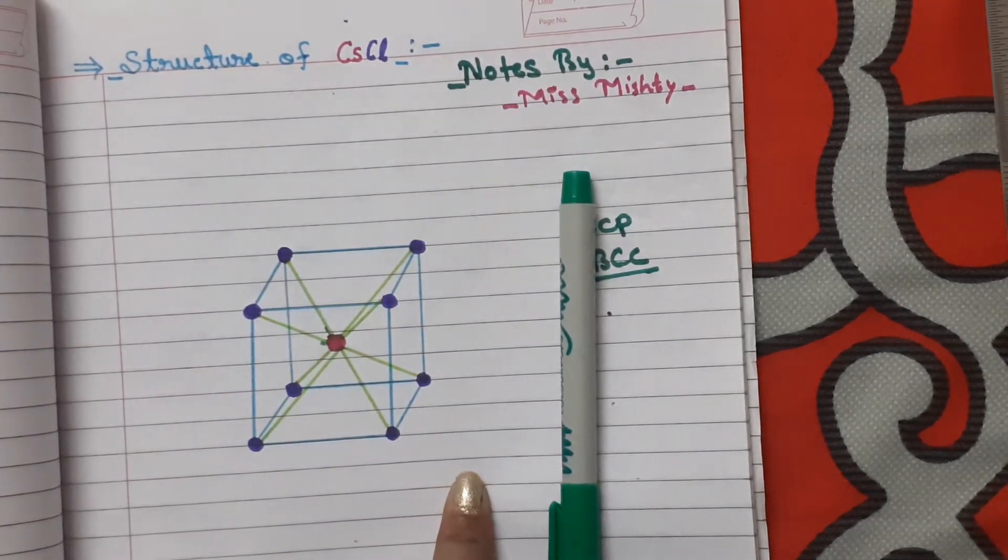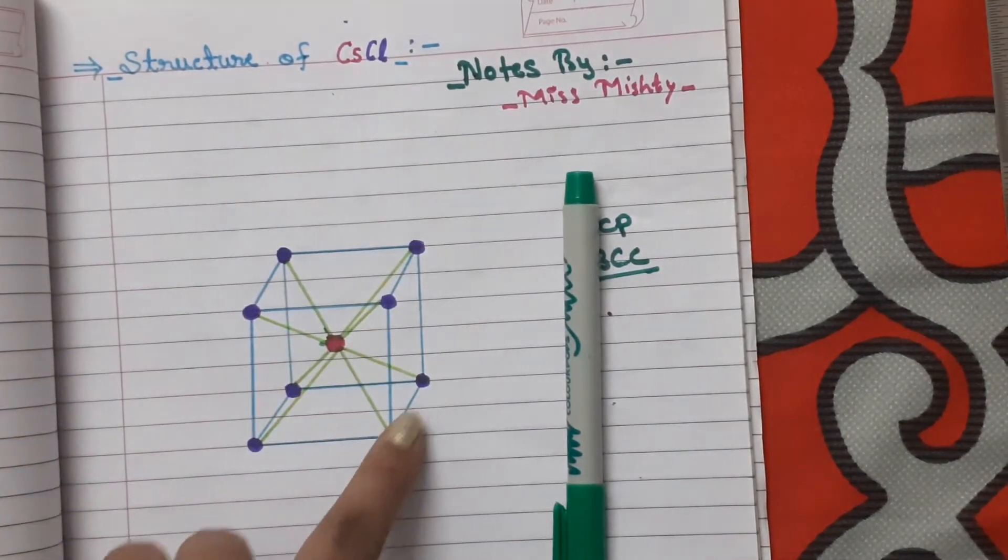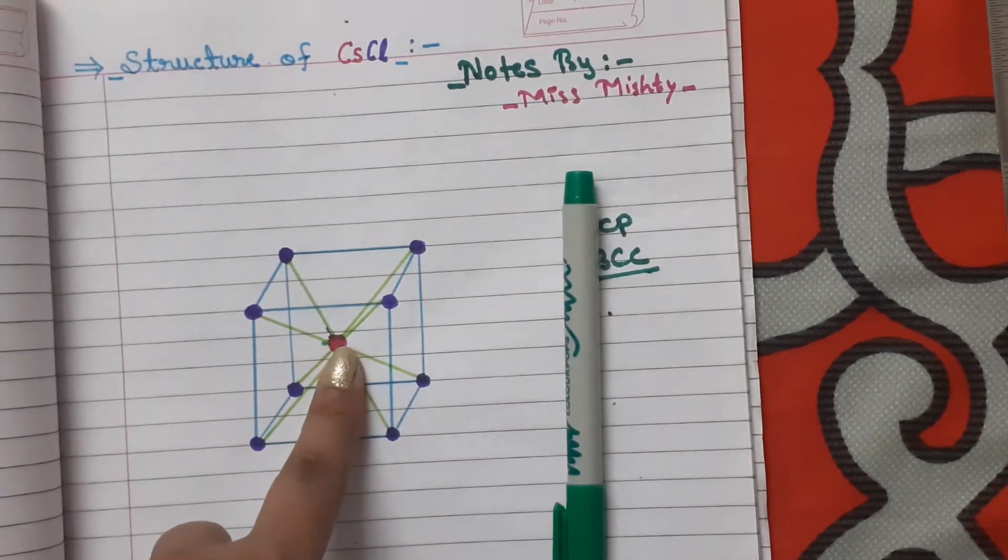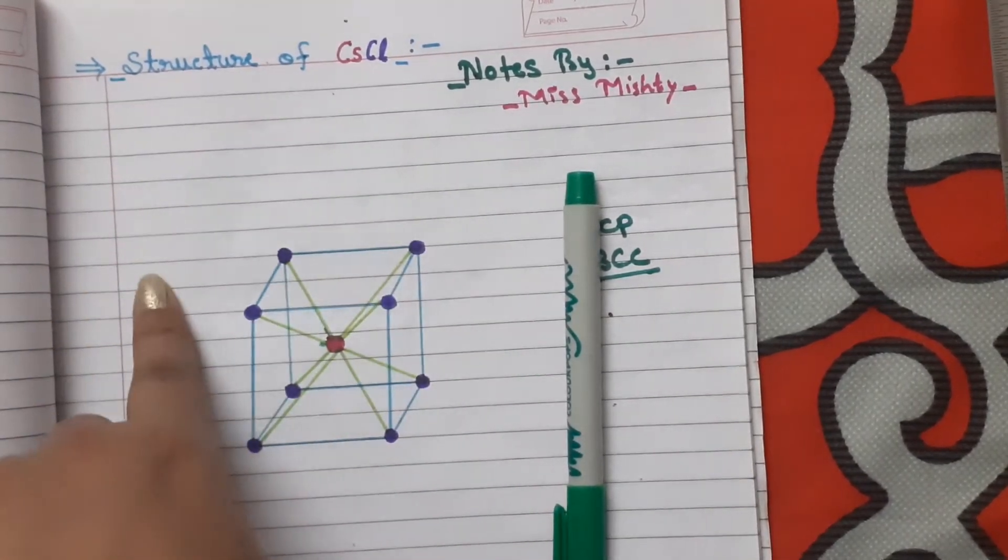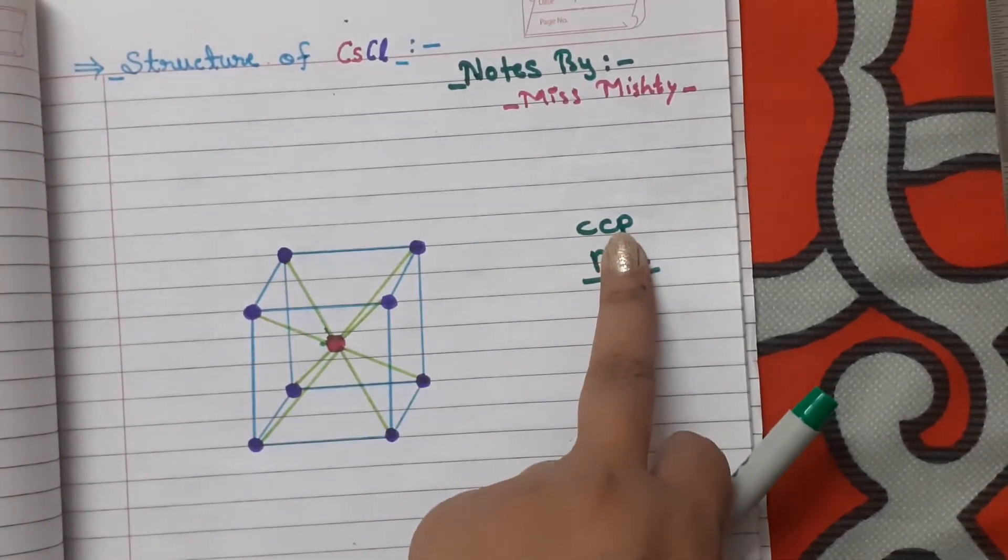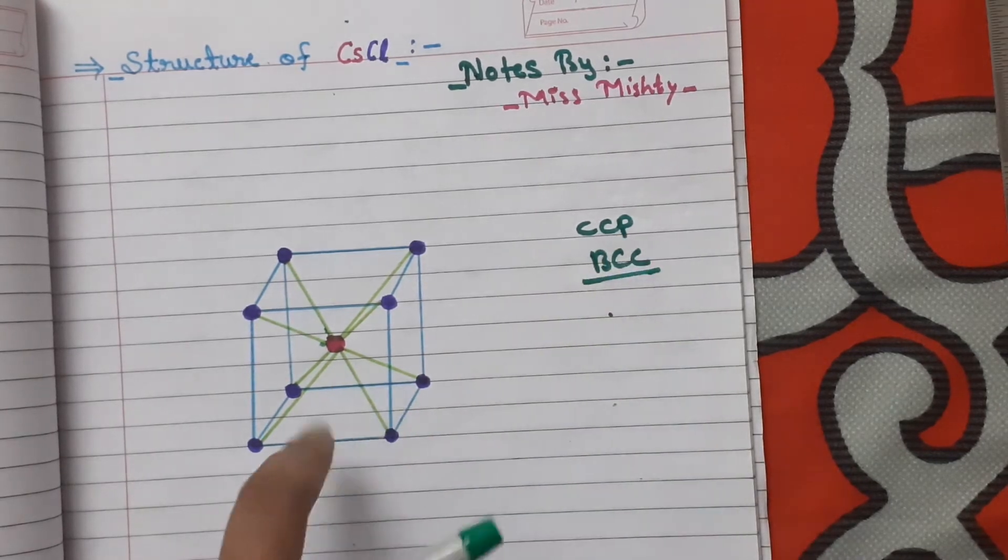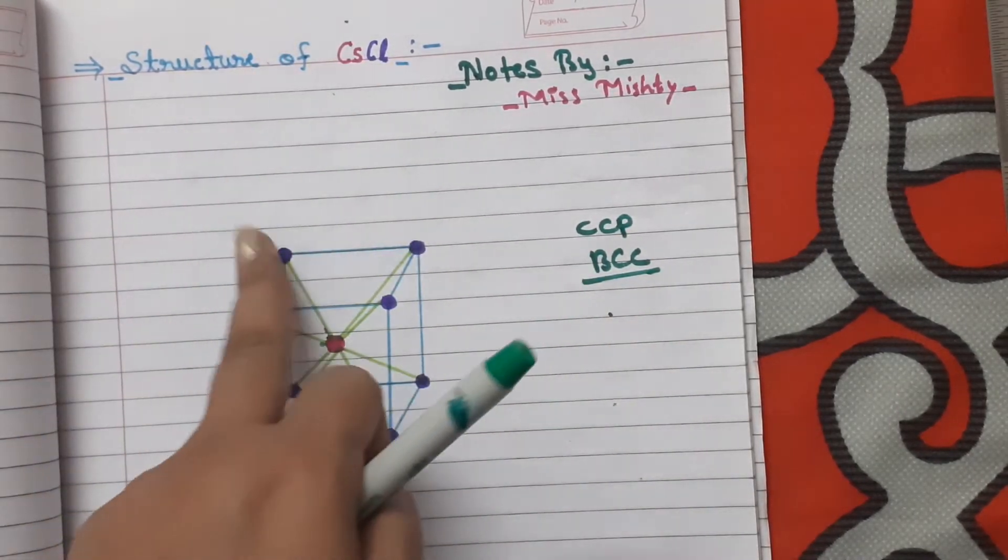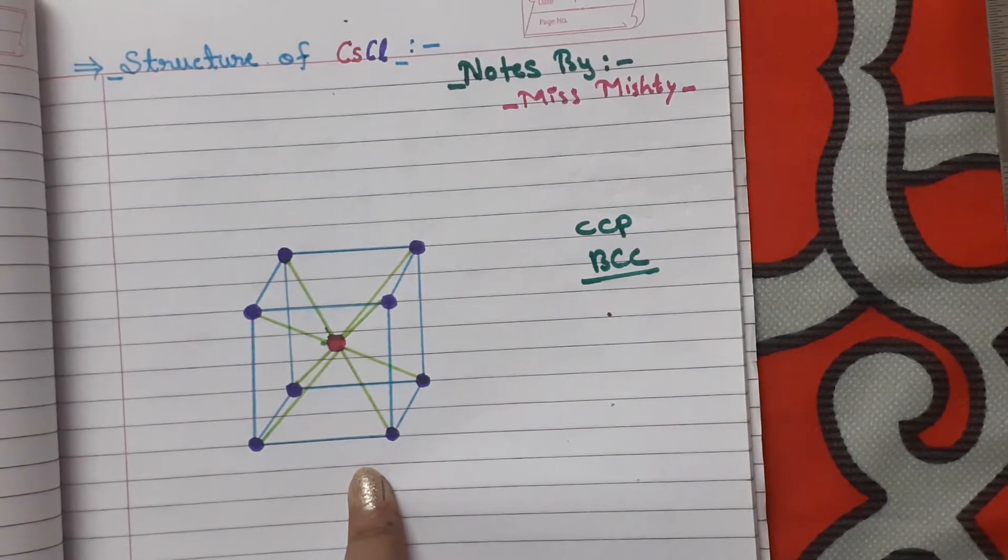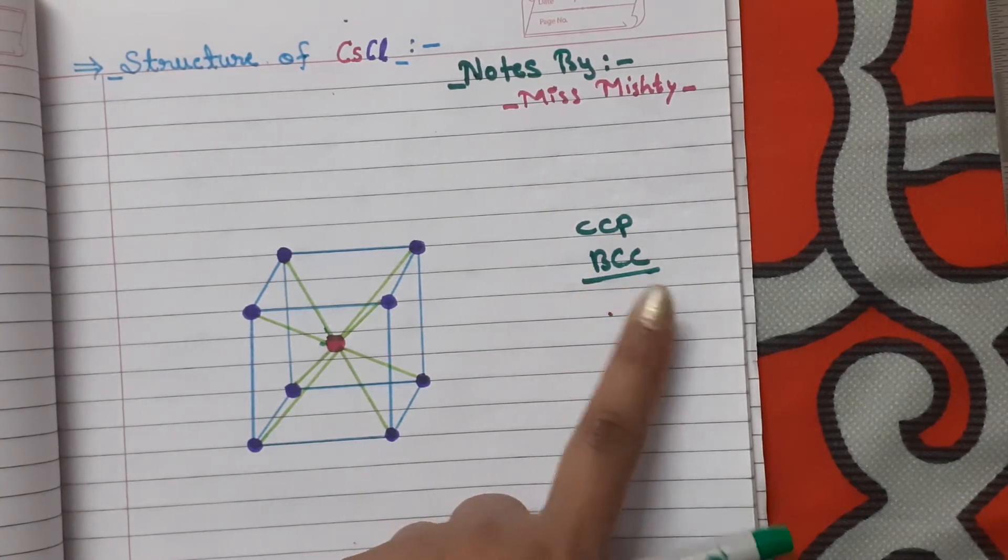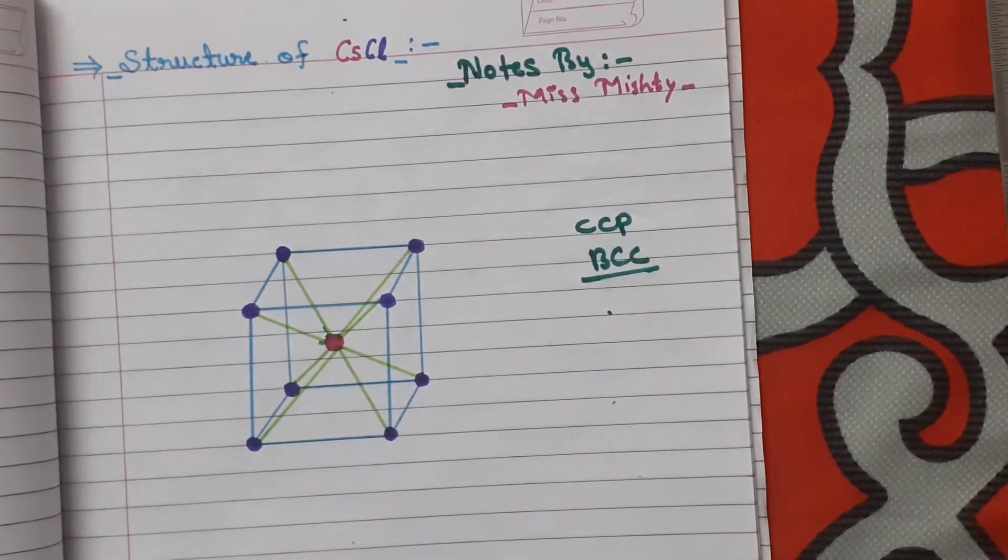You can see the simple cube here and you can notice that there are circles on the corners as well as on the body center only. So if it is a cube, it is a CCP type of structure, cubic closed packing type of structure. And if the balls are on the corners as well as on the body centers, it will be a BCC type of structure, which is also known as body centered cubic structure.